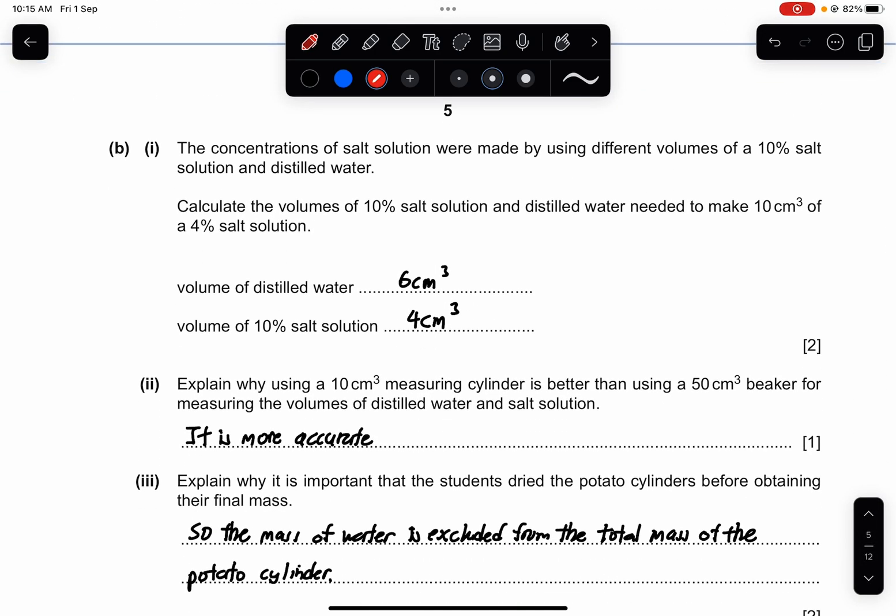Part B1. The concentration of salt solution were made by using different volumes of 10% salt solution and distilled water. Calculate the volume of 10% salt solution and distilled water needed to make 10 cm³ of a 4% salt solution. So it would be 6 cm³ of distilled water and then 4 cm³ of 10% salt solution.